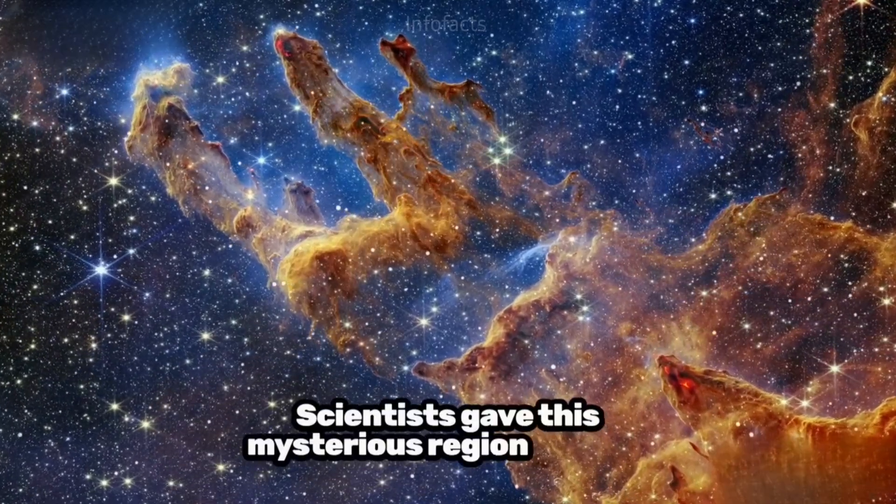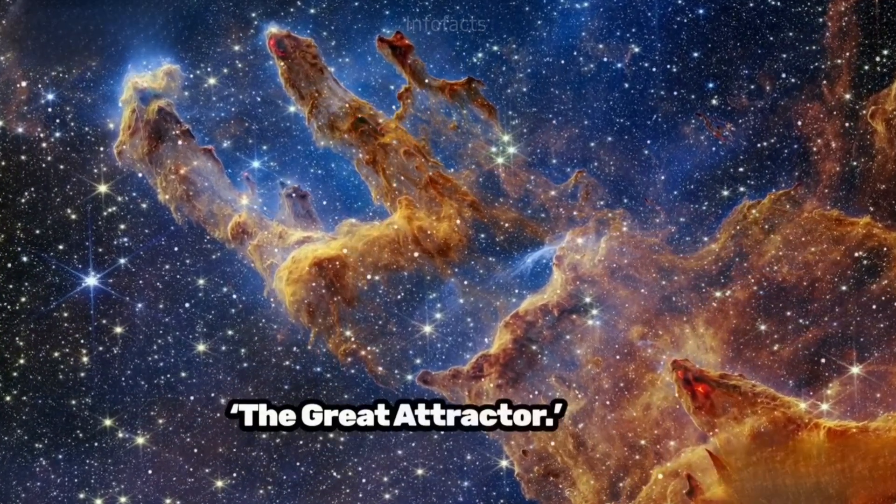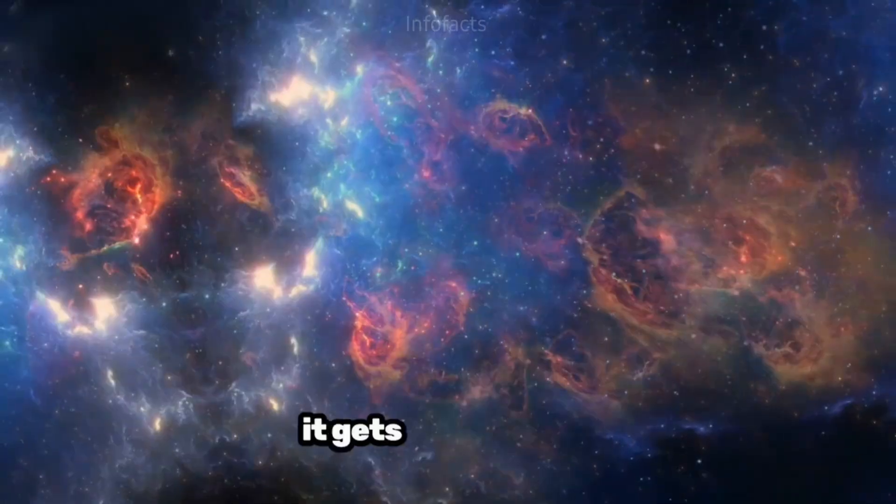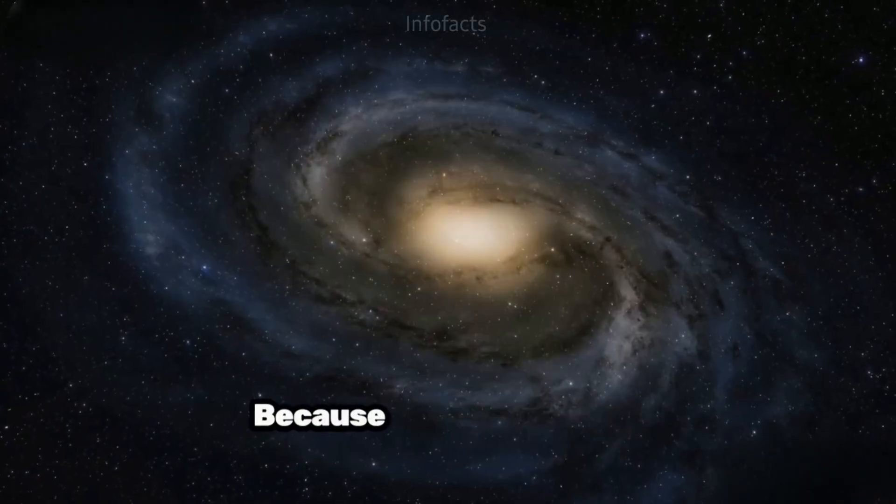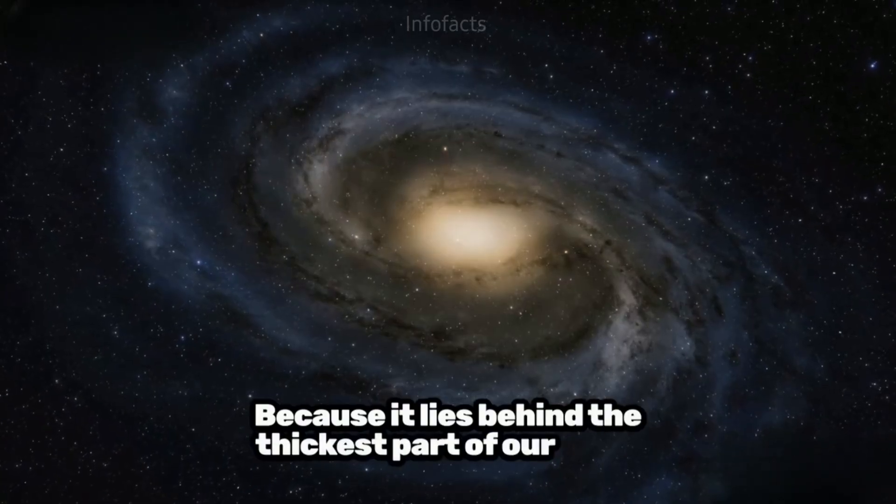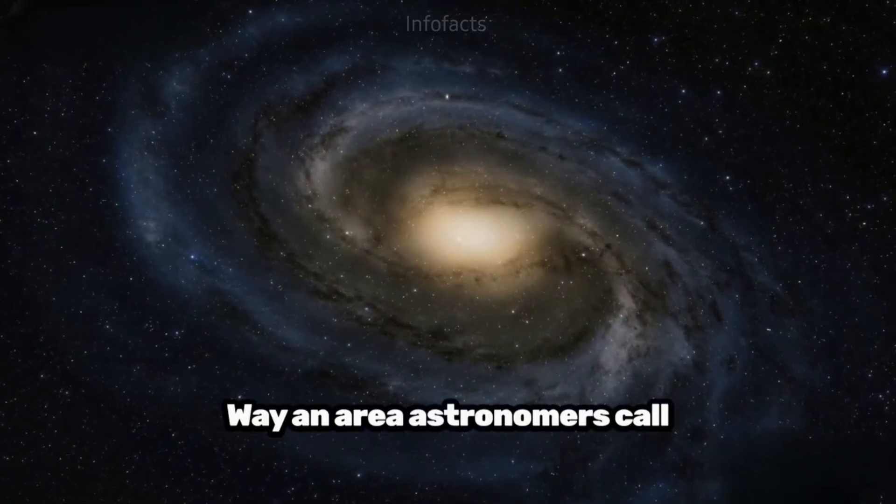Scientists gave this mysterious region a name: the Great Attractor. Here's where it gets really weird. We can't actually see the Great Attractor. Why? Because it lies behind the thickest part of our Milky Way, an area astronomers call the Zone of Avoidance.